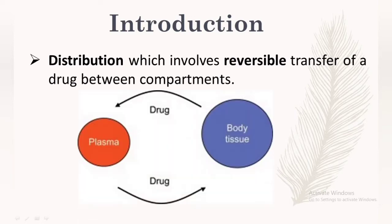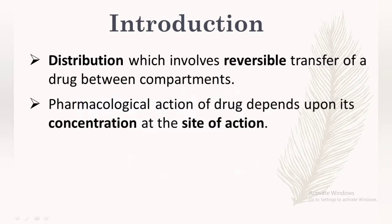You can see in the picture that from the site of absorption, drug reaches the blood plasma, and from blood plasma it reaches several body tissues. From those body tissues, the drug comes back to the blood, that is systemic circulation, in order to be excreted from our body. That is why it is known as the reversible transfer of drug.